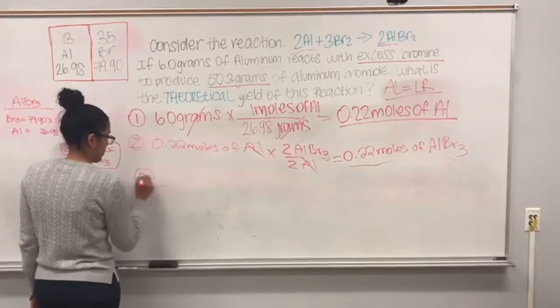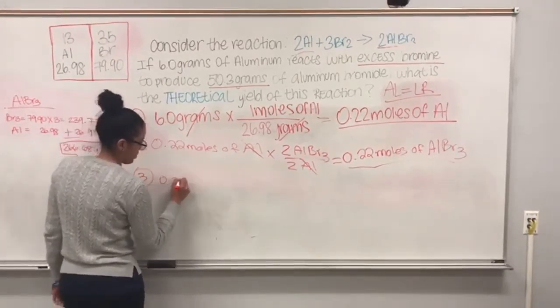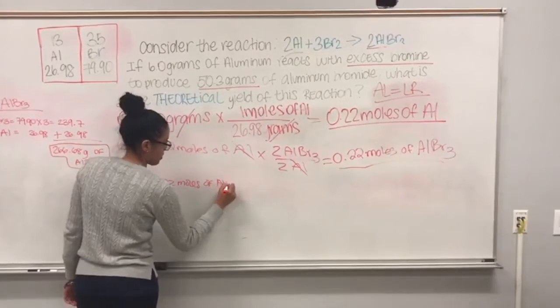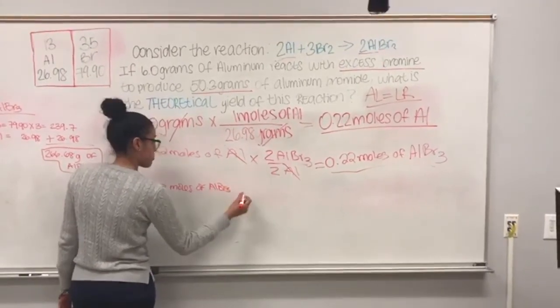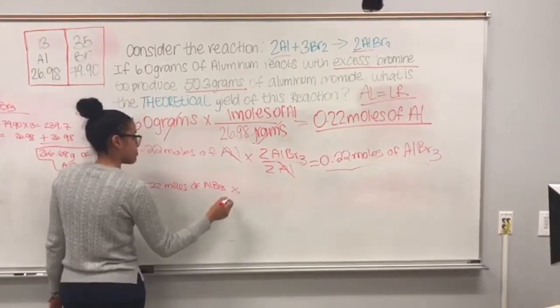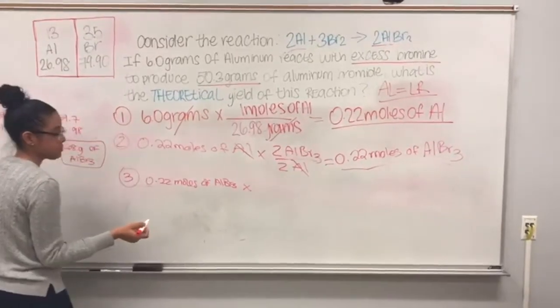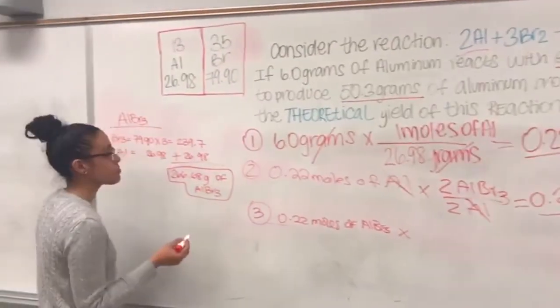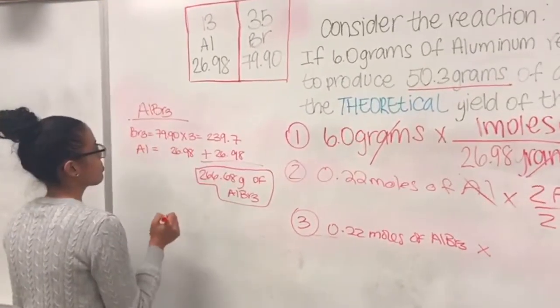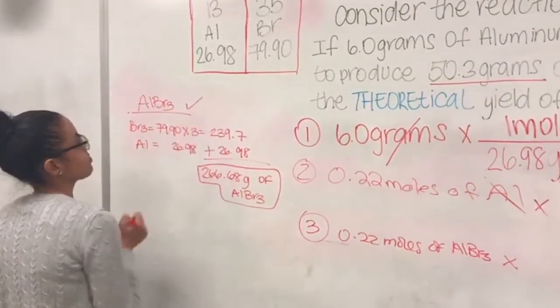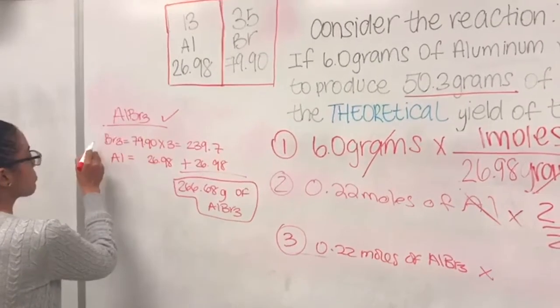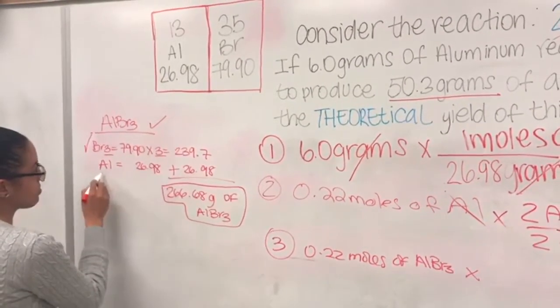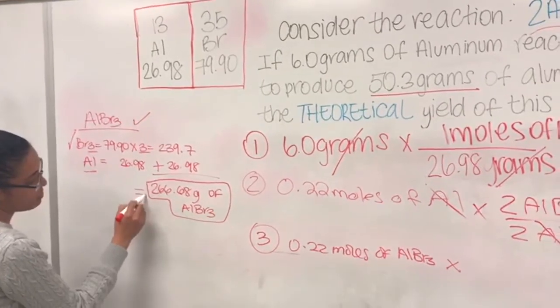For the final step, we take 0.22 moles of AlBr3 and multiply by the ratio of molecular weight to moles. To get the molecular weight of AlBr3, we multiply the atomic mass of bromine times 3 plus aluminum, which equals 266.68 grams.